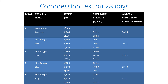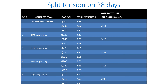The optimum copper slag replacement is 30%, for which we have obtained a value of 39.93. For split tensile strength, conventional concrete gives 3.11 and 30% copper slag concrete gives 3.39, which is the optimum.